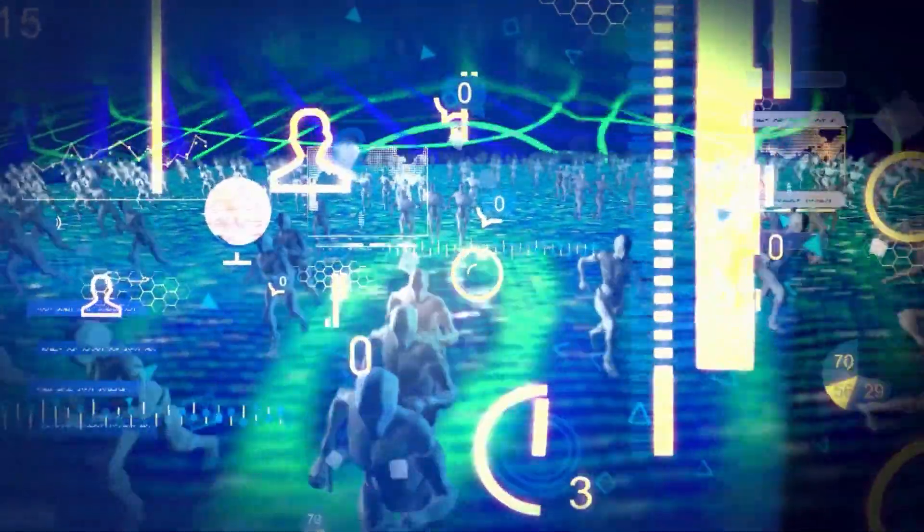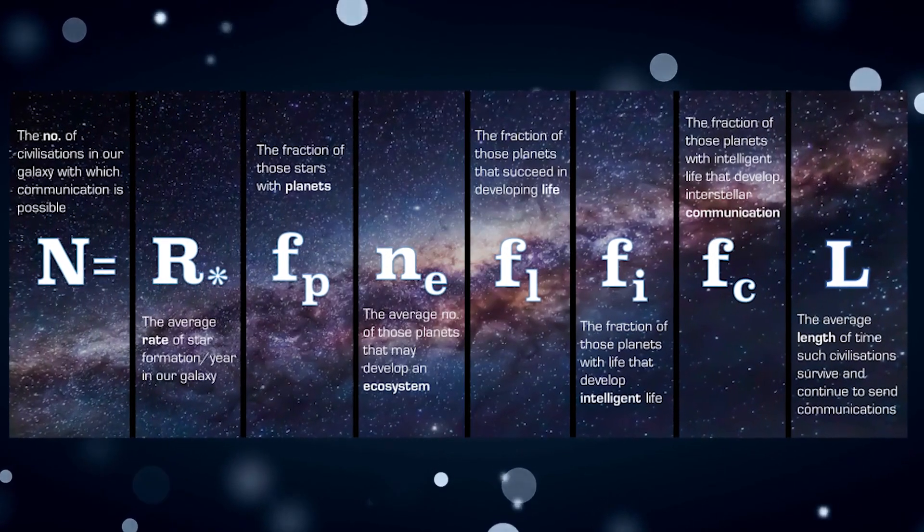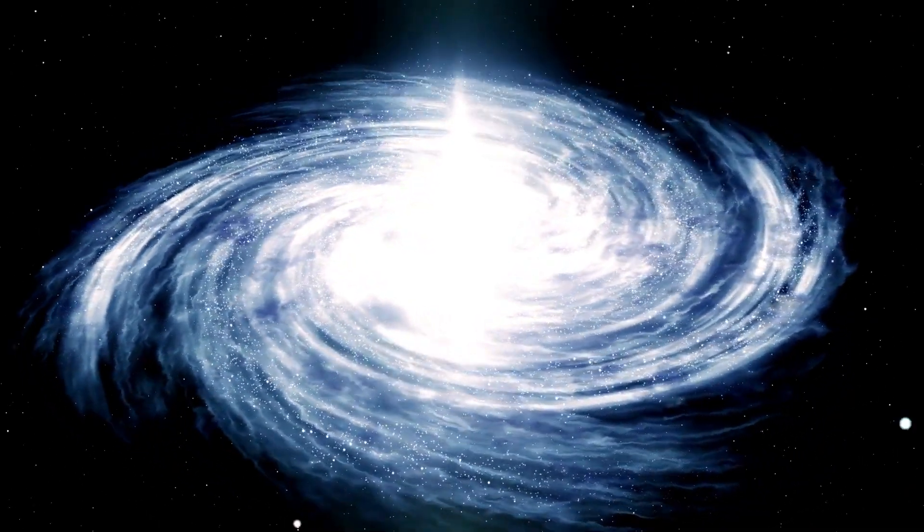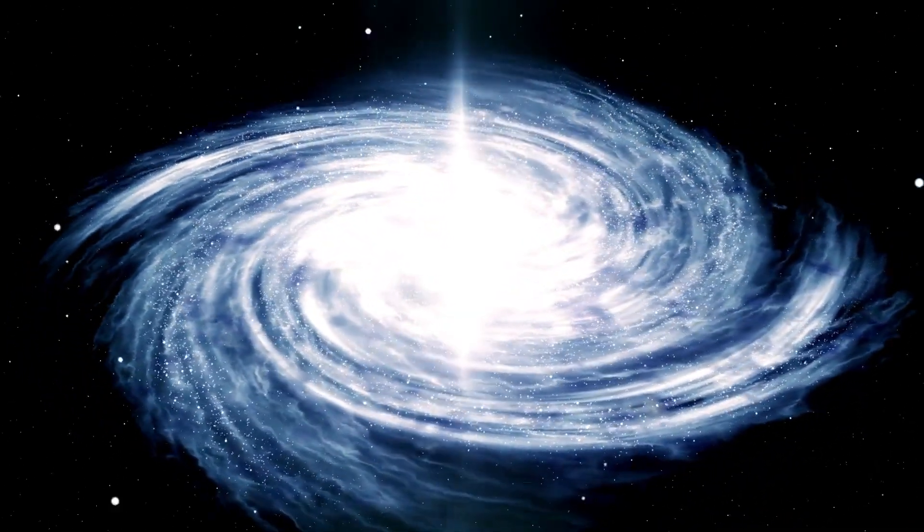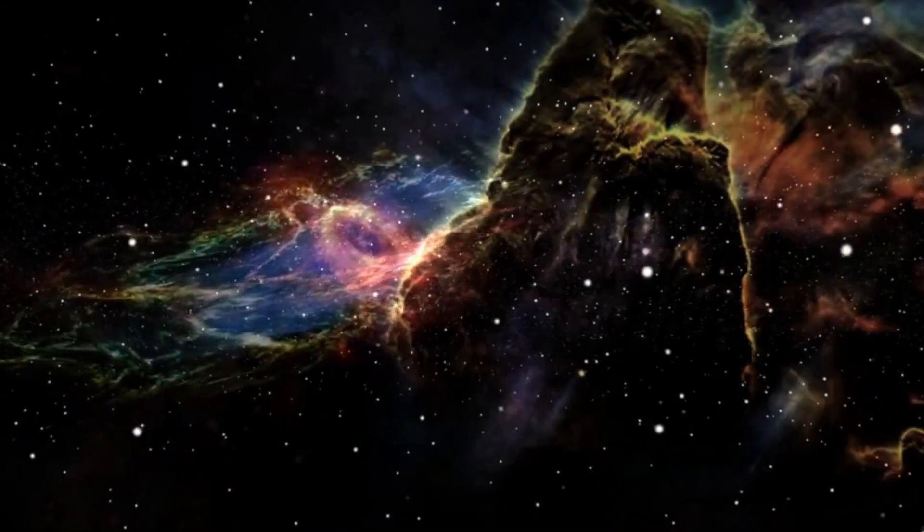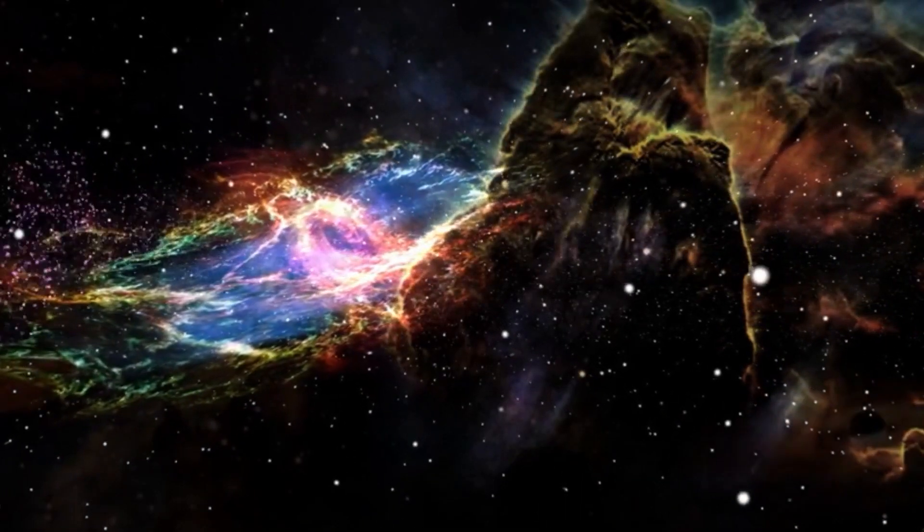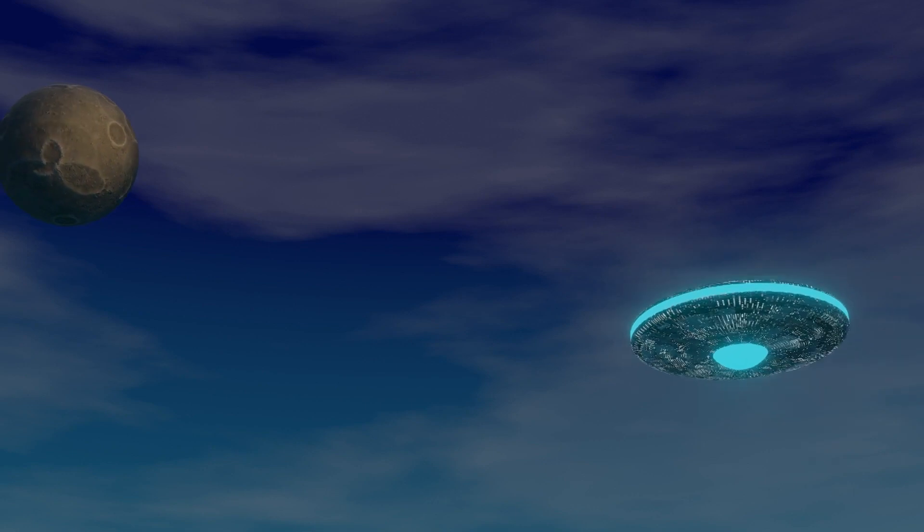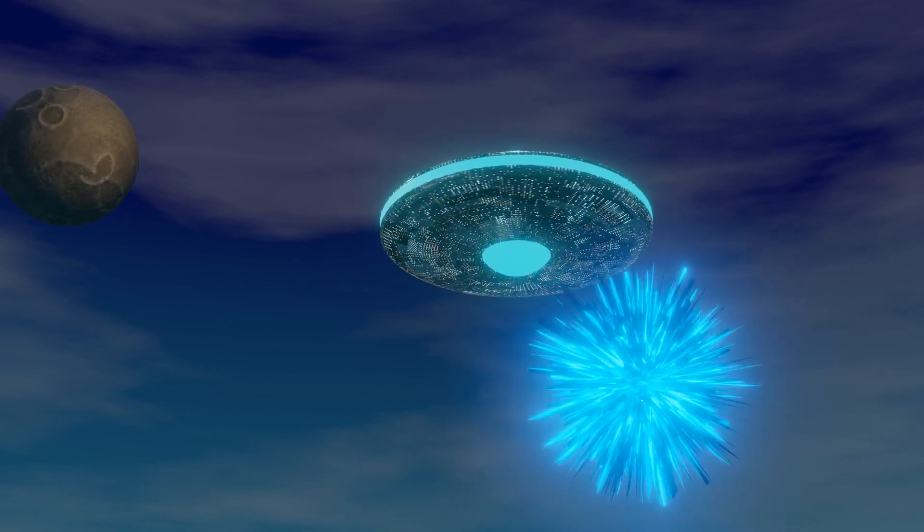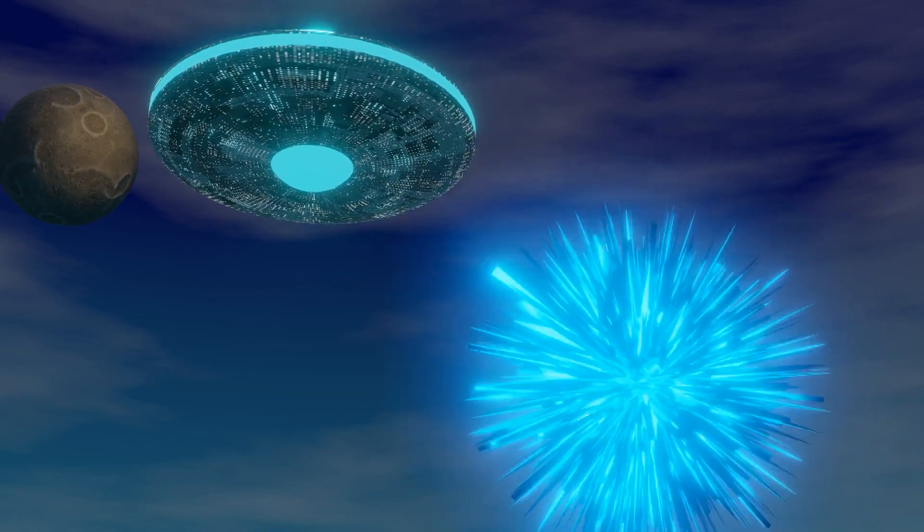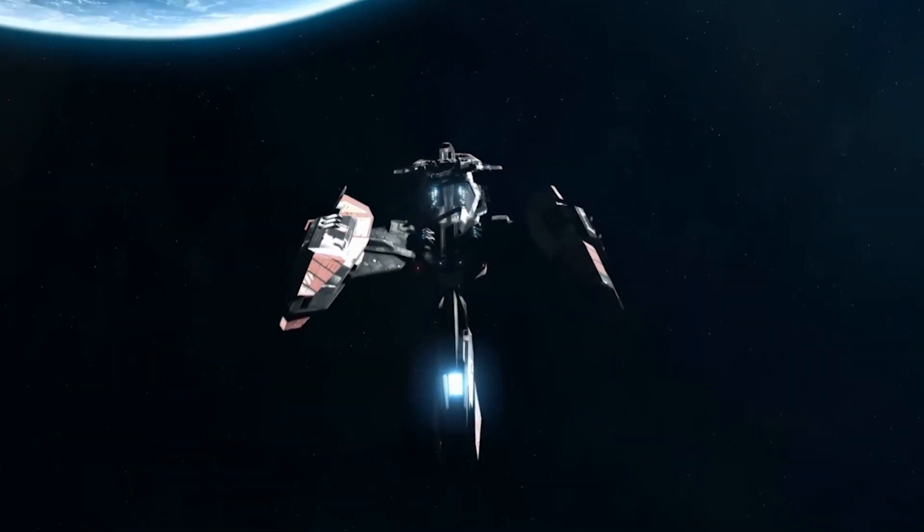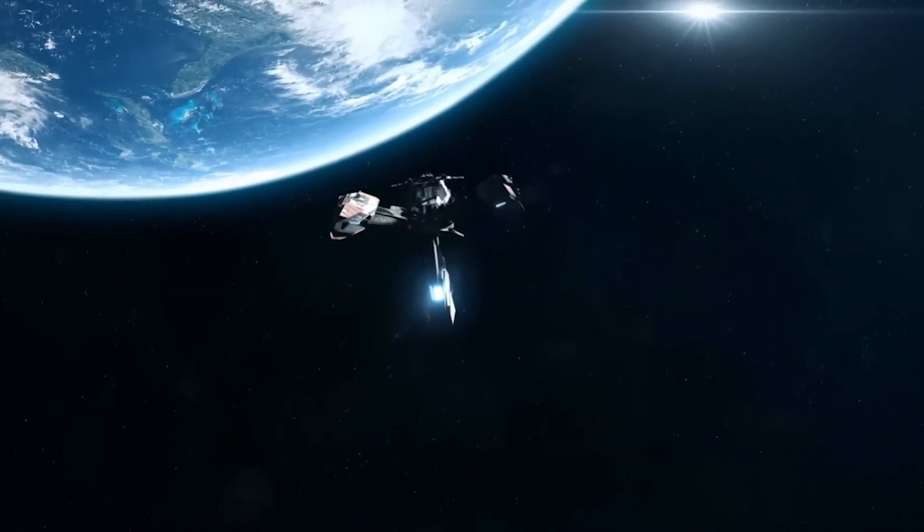According to researchers who have made tweaks to the Drake equation, which gives an estimate to the number of active communicative civilizations in the Milky Way galaxy based on a series of factors, there is a possibility that there is no other intelligent life in the observable universe. They put the chances of us being alone in our galaxy at between 53% and 99.6%, and between 39% and 85% in the entire observable universe. The Great Filter Hypothesis suggests that all civilizations have to survive some huge calamity or barrier to evolve.